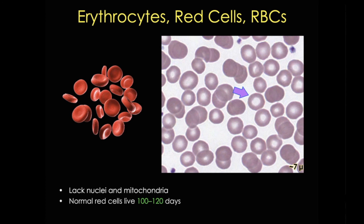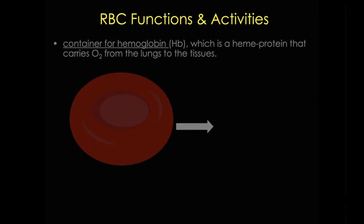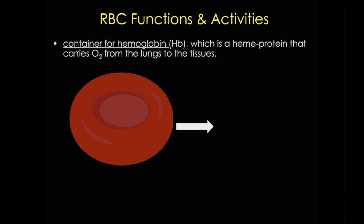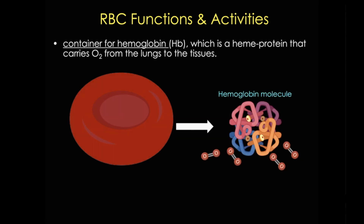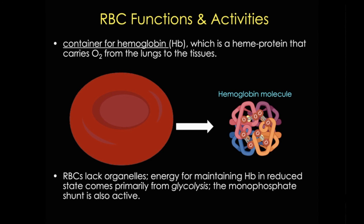Let's start by thinking about the function of erythrocytes. Essentially, these cells are bags of hemoglobin, which carries oxygen from the lungs to the tissues. Hemoglobin is a tetrameric oxygen-carrying protein. Now a couple of important points about red blood cell function: recall that these cells lack organelles, so without mitochondria they rely on anaerobic glycolysis for energy needs, and they also can't replace defective proteins, including defective hemoglobin.